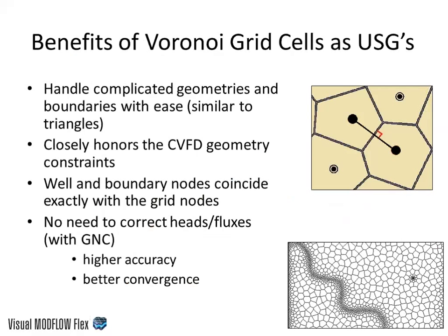We chose Voronoi grid cells for unstructured grids for several reasons. They handle complicated geometries and boundaries well — similar to triangles and finite elements. They closely honor the CVFD (control volume finite difference) geometry constraints used by Modflow USG. The key constraint is that the connecting line between adjacent cell centers must cross the shared edge at a 90-degree angle and bisect it. Deviating from this condition introduces errors, which is where the ghost node correction package is used. When we generate Voronoi grids, well and boundary nodes coincide exactly with grid nodes, so no offset correction is needed, resulting in higher accuracy and better convergence.